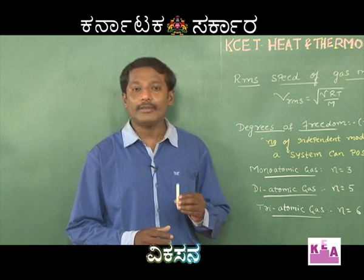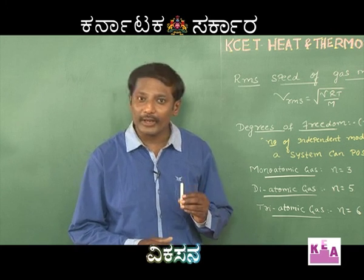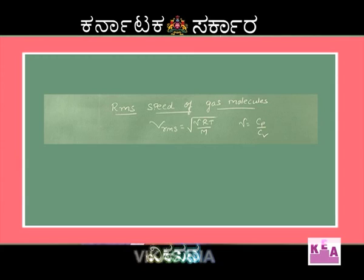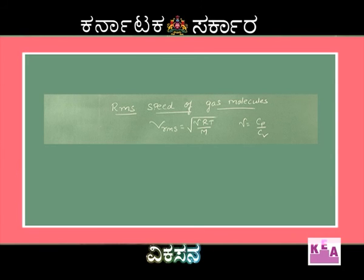The RMS speed of the gas molecule is given by V_RMS equals square root of gamma R T by M.